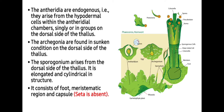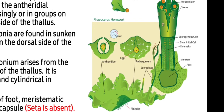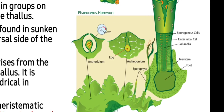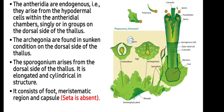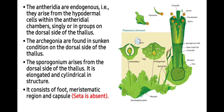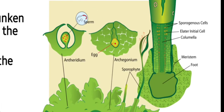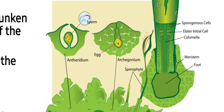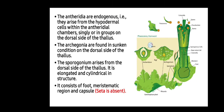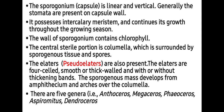The sporogonium arises from the dorsal side of the thallus. It is elongated and cylindrical in structure, that's why we call it hornwort. It consists of a foot, a meristematic region, and a capsule. The seta is absent here, and this is a characteristic feature of this group.